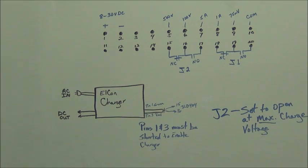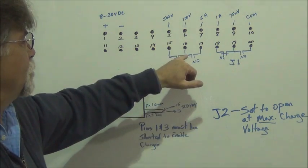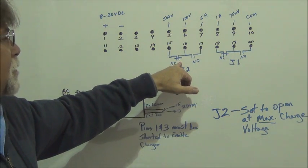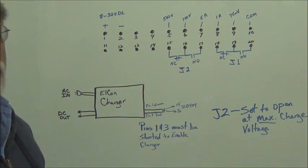So anyway, 16 is common on J2. Between 15 and 16, you have a normally closed portion of the relay. And between 16 and 17, you have a normally open.